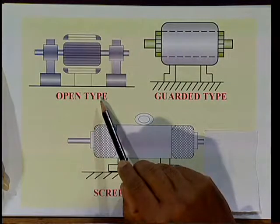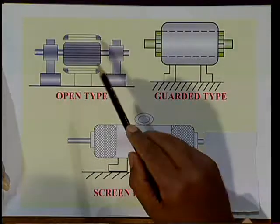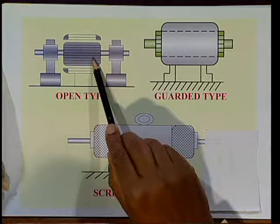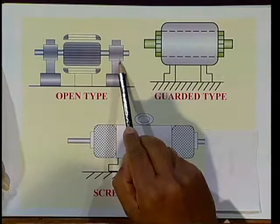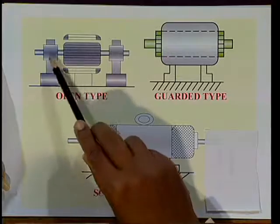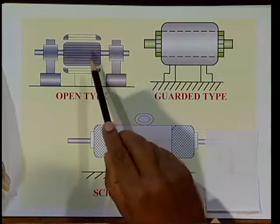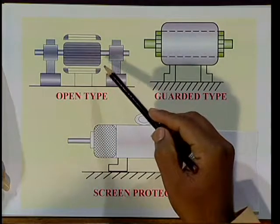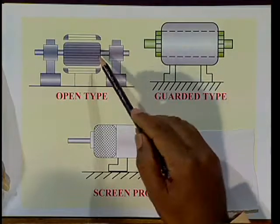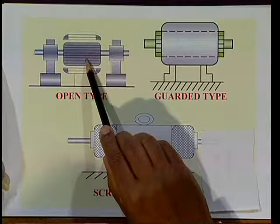In open type enclosures, the stator and rotor are exposed to free contact with air, with the rotor supported on bearings. Due to exposure to surrounding air, there may be chances of deposition of dust, dirt, and other moisture particles. Hence, we have to place this motor in a separate, neat, and clean room. Generally, this type of motor is used for large-size DC generators and motors.